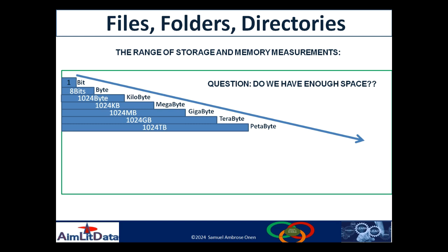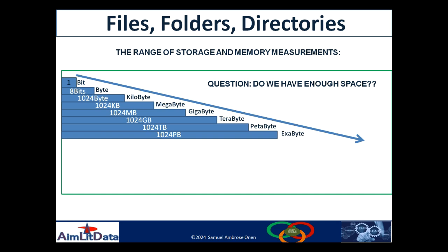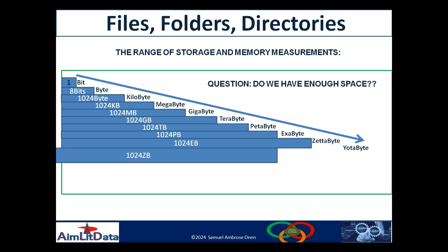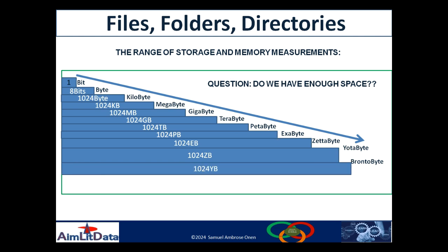To get petabytes, you multiply 1024 — which is the base — times terabytes. To get exabytes, you multiply 1024 times petabytes. To get zettabytes, you multiply the base, 1024, times exabytes. To get yottabytes, you multiply 1024 times zettabytes. And it continues like that to get brontobytes.